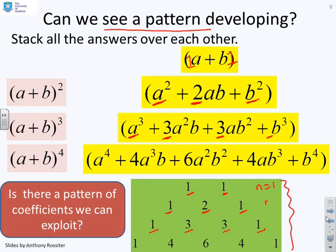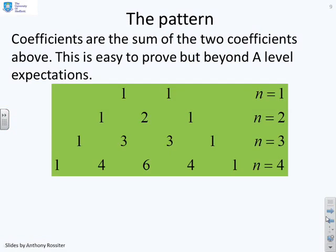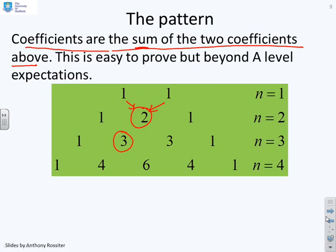So here I had n equals 1, then I had n equals 2, then I had n equals 3, and so on. Now why is that useful? If you look at this grid, what you'll notice is the coefficients are the sum of the two coefficients above. So if you look at this 2, you'll see it's come from 1 plus 1. If you look at this 3, you'll see it's come from 2 plus 1. If you look at this 3, you'll see it's come from 2 plus 1. If you look at the 4 down here, you'll see it's come from 3 plus 1. If you look at this 6, you'll see it's come from 3 plus 3, and so on.